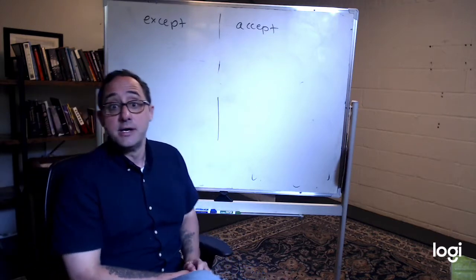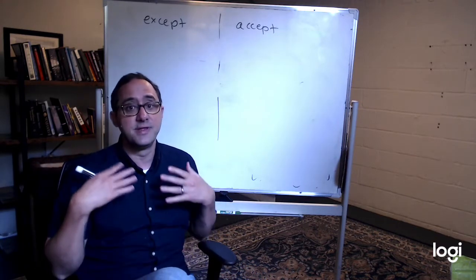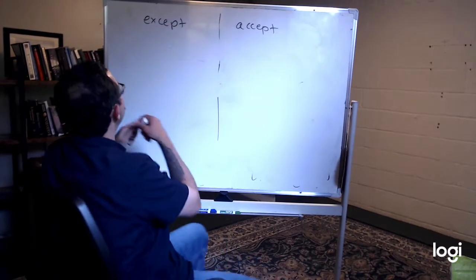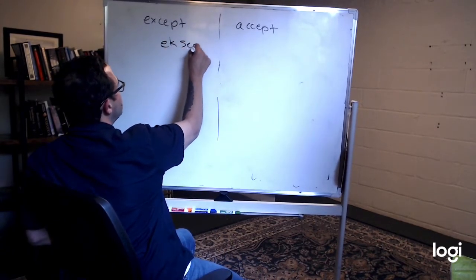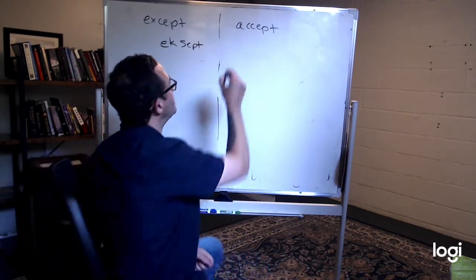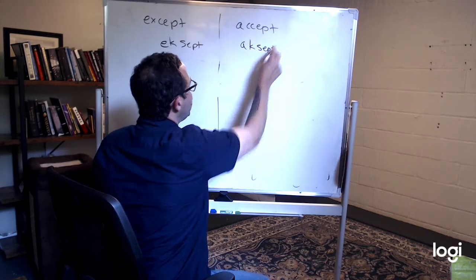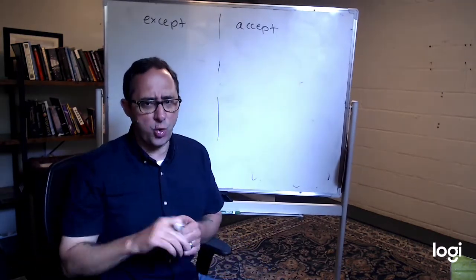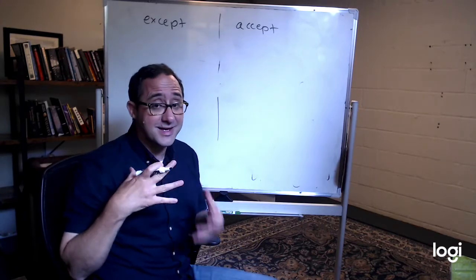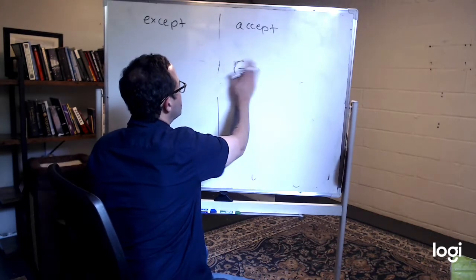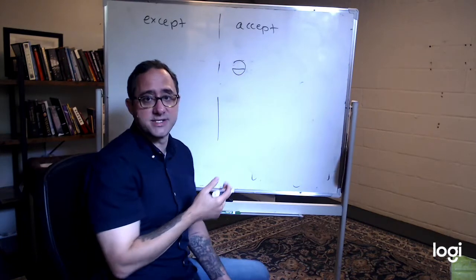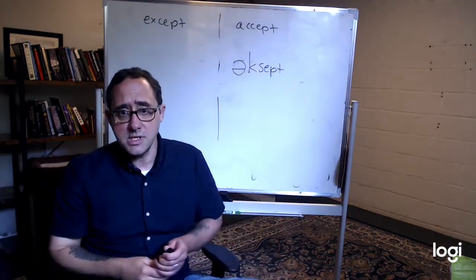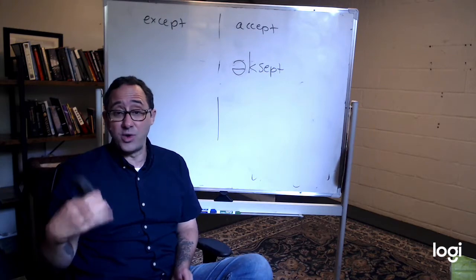Okay, so accept and except. The thing is, we pronounce them the same as we talk. Now if I think about it, I say accept, except here, accept. And here I say accept. If I think about it. But really, we don't say them any differently. That's the problem with this is that you can wonder which one is being used.